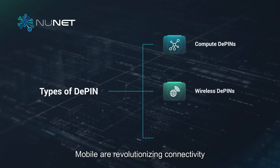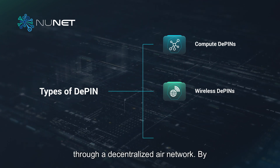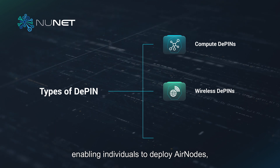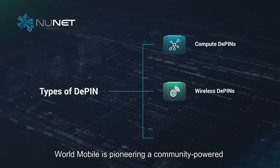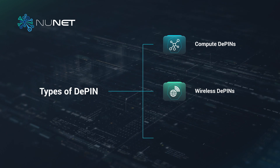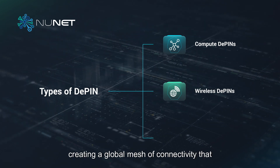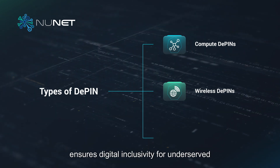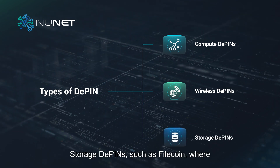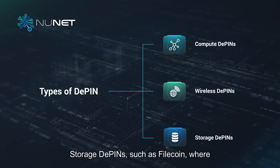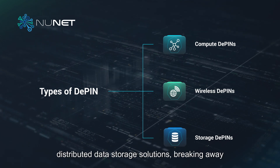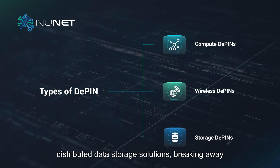Wireless DePINs, as demonstrated by World Mobile, are revolutionizing connectivity through a decentralized air network. By enabling individuals to deploy air nodes, World Mobile is pioneering a community-powered approach to extend internet access, creating a global mesh of connectivity that ensures digital inclusivity for underserved regions.